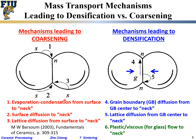So ideally we want the mechanism on the right — the stuff moving between grain boundaries to the neck location, which is the so-called densification mechanism.